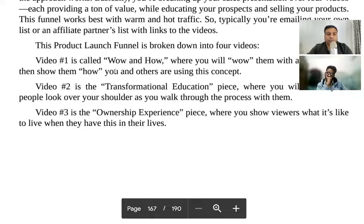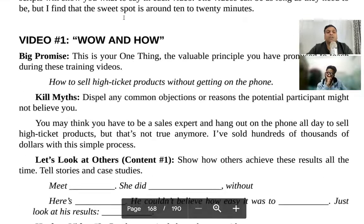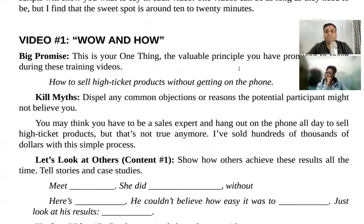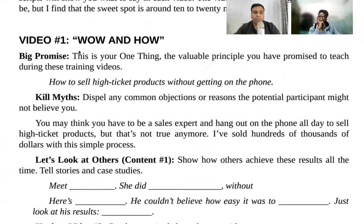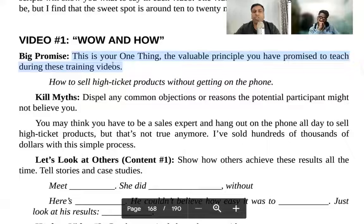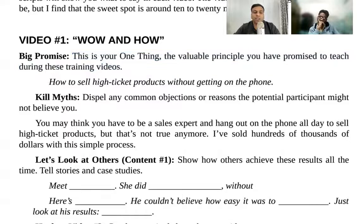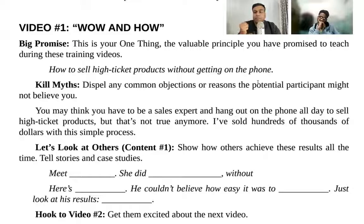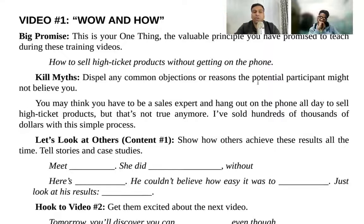The day one content is the 'Wow and How.' The Wow is the big promise — your one thing, the valuable principle you've promised to teach during these training videos. Examples include: 'How to sell high ticket products without getting on the phone,' 'How to start your career in digital marketing in five days,' or 'How to get a job for $1,000 a month in just five days.' That is the big promise.